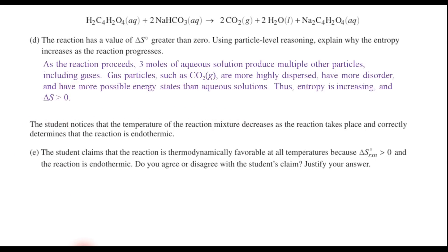Now, in part E, it says that the student notices that the temperature of the reaction mixture decreases as the reaction takes place and correctly determines that the reaction is endothermic. So the student claims that this reaction is thermodynamically favorable at all temperatures because the entropy is increasing, delta S greater than 0, and the reaction is endothermic. Now, do you agree or disagree? Well, if you've learned much about thermodynamics and chemistry, you know that this part right here, the fact that it's endothermic, should be a red flag. If something is endothermic, it's not going to be thermodynamically favored at all temperatures, isn't it? Because we know that the universe really doesn't like endothermic reactions. And so the answer is that we should disagree. And so since delta S is a positive number, you know, greater than 0, and delta H is also positive, endothermic, this means that the reaction is only going to be thermodynamically favorable at relatively high or relatively very positive temperatures. So that's your answer for part E.